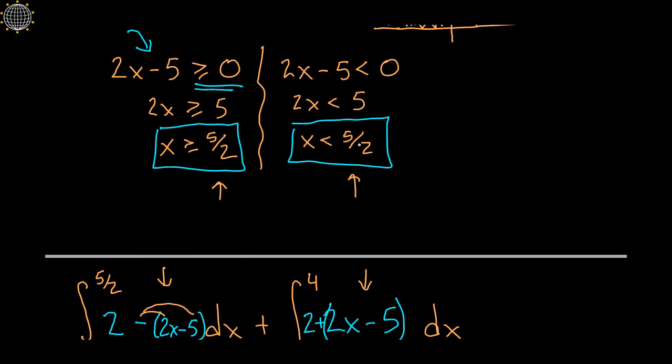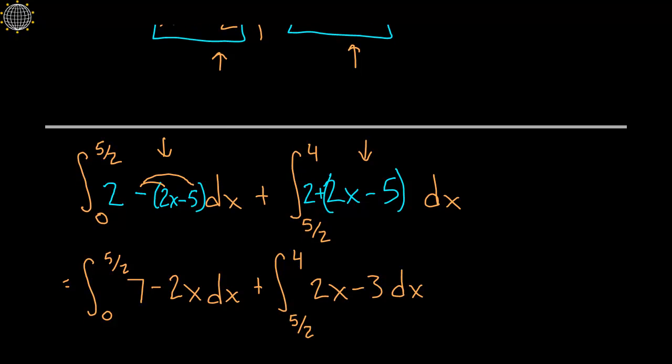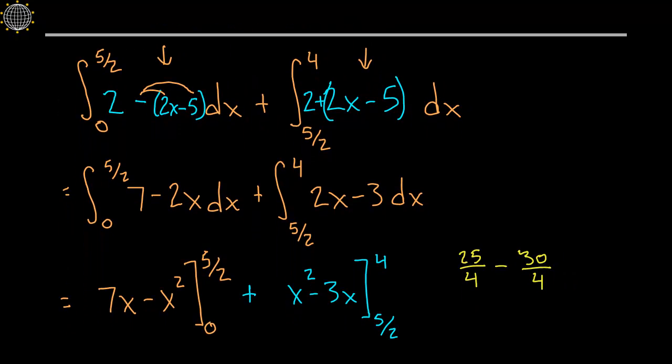And for the x's less than 5 halves, being that this quantity was going to be negative, we had to change its sign by making it negative, so that in effect a double negative would turn it positive, like an absolute value would be, like an absolute value would do.